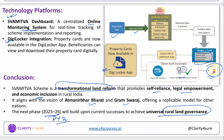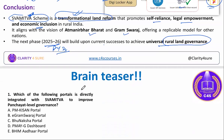You can use the Swamitwa scheme as an example while writing descriptive answers in various examinations. You can cite this scheme while addressing questions with respect to land reforms, rural disputes, and financial empowerment. It has various dimensions — social and financial — and can be used in various places in your answers to illustrate how Swamitwa is financially empowering rural India.